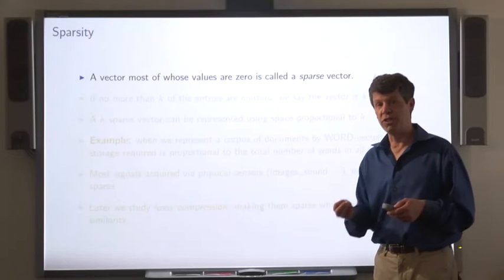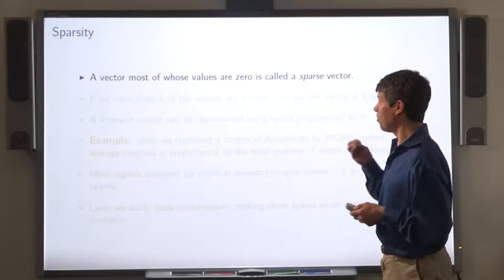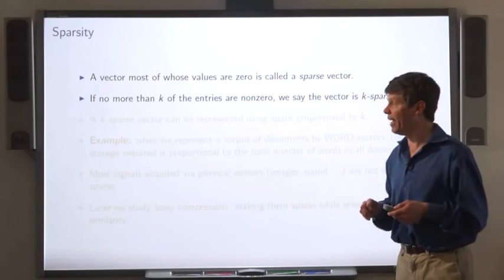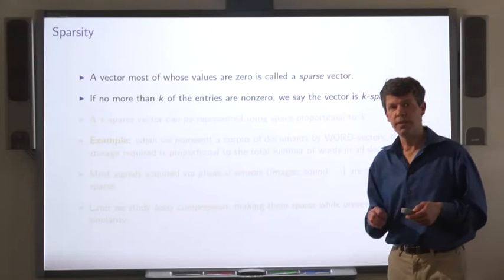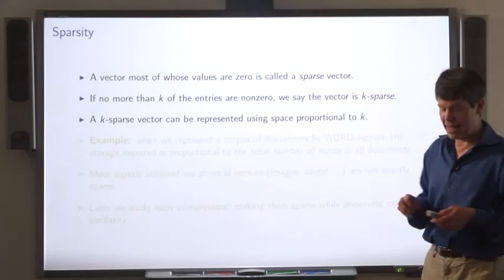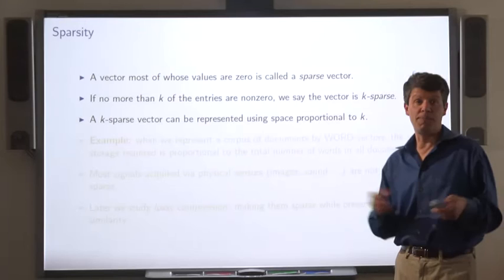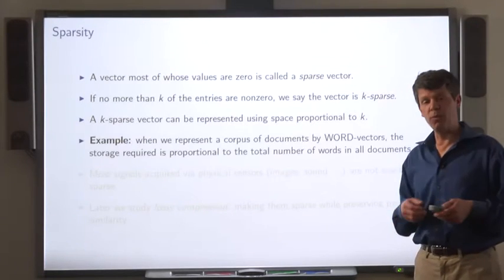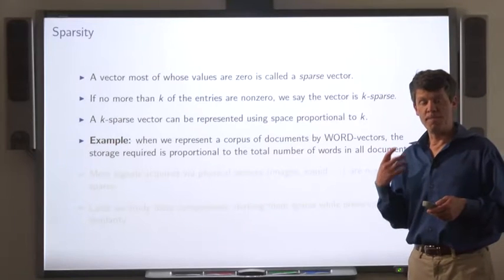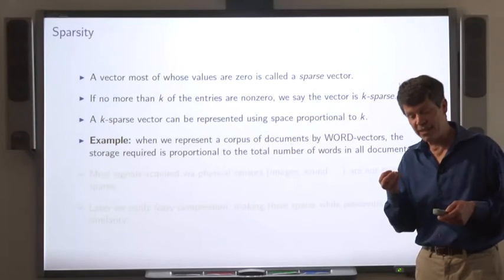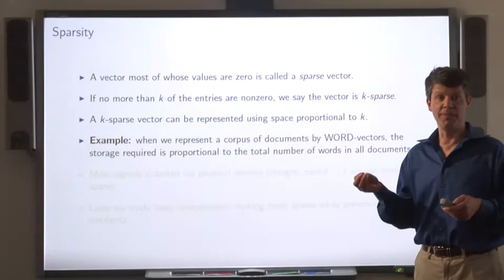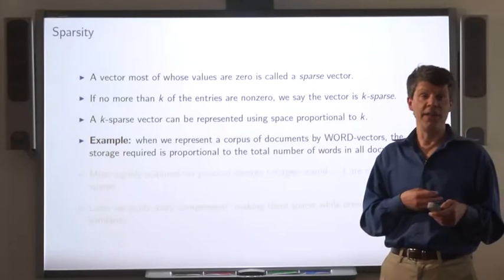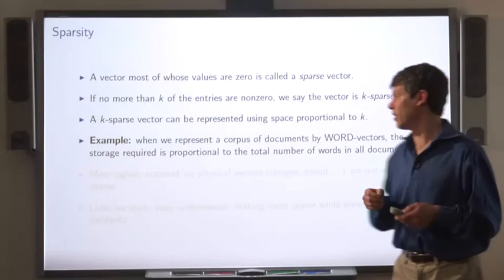A vector most of whose entries are zero is called a sparse vector. And if no more than k of those entries are non-zero, we say the vector is k sparse. A k sparse vector can be represented using space proportional to k. So for example, when we're using this bag of words model, we can represent all the documents in a corpus of documents. And the total space required is no more than the sum totals of the length of the documents.